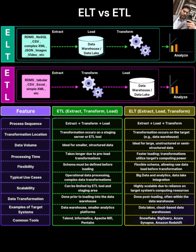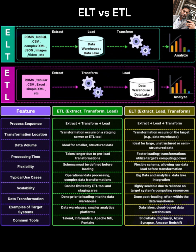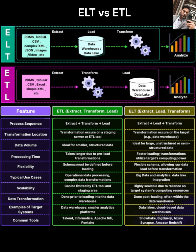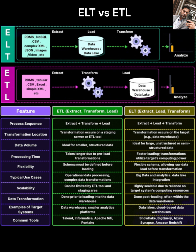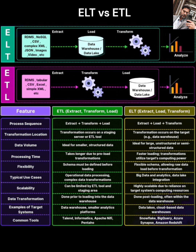With ETL, the steps happen in this order. Extract: you pull data from your source systems — these could be databases like RDMS or NoSQL, files like CSVs, or other sources. Transform: this is the key step that happens before loading. You clean the data, restructure it, aggregate it, apply calculations, and make sure it fits the predefined structure, or schema, of your target data warehouse. This transformation usually happens on a separate staging server or within the ETL tool itself.